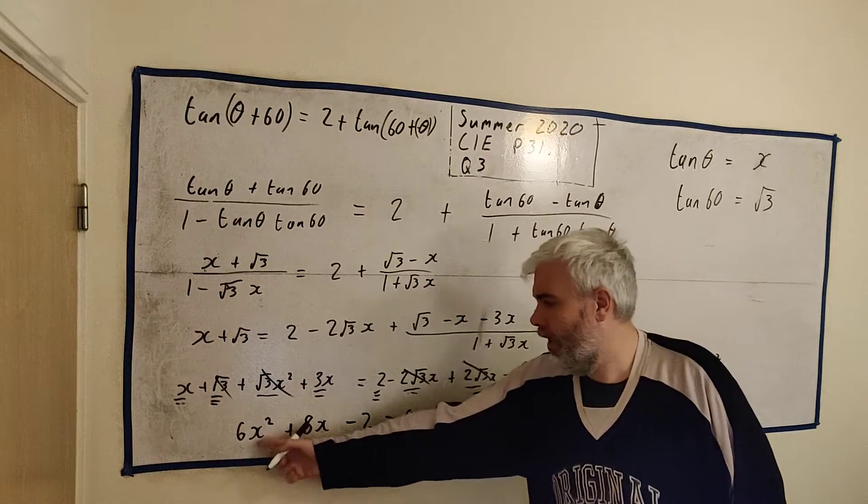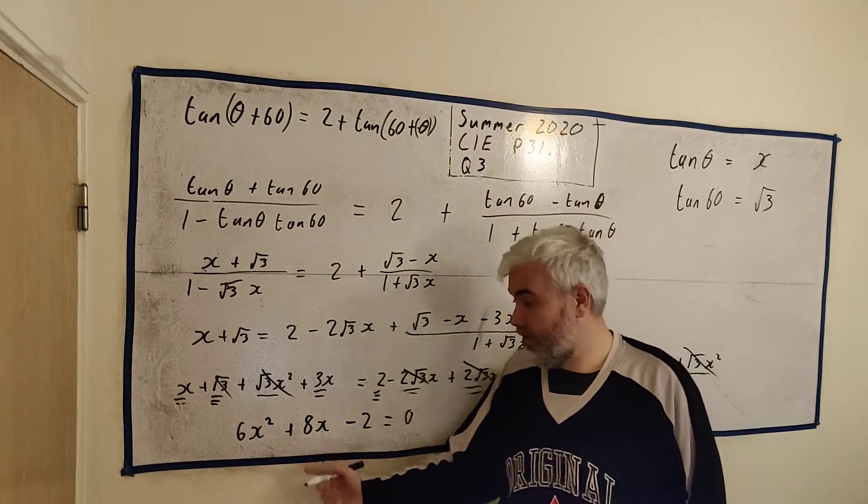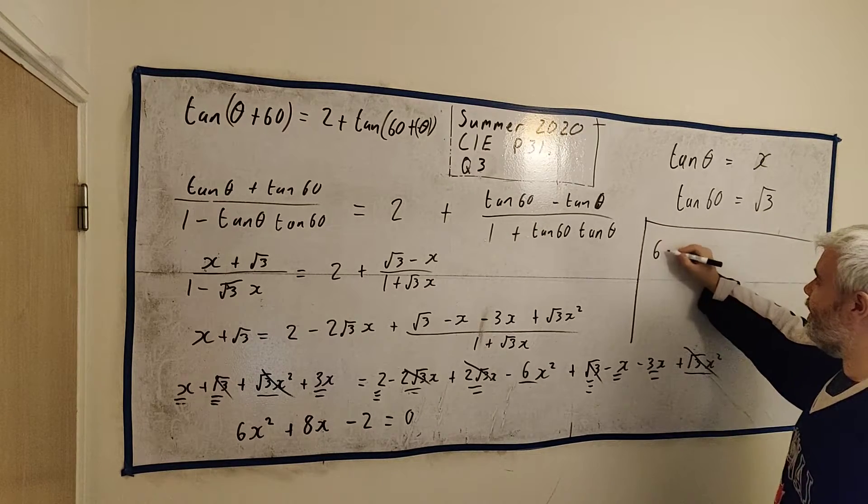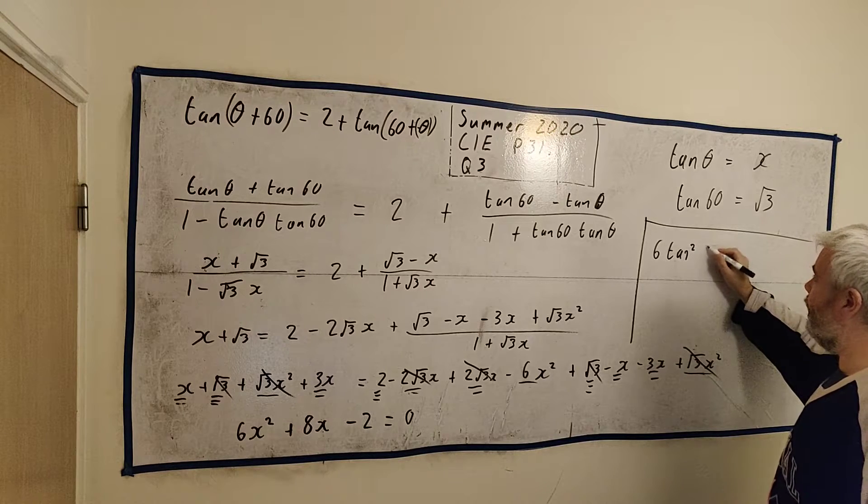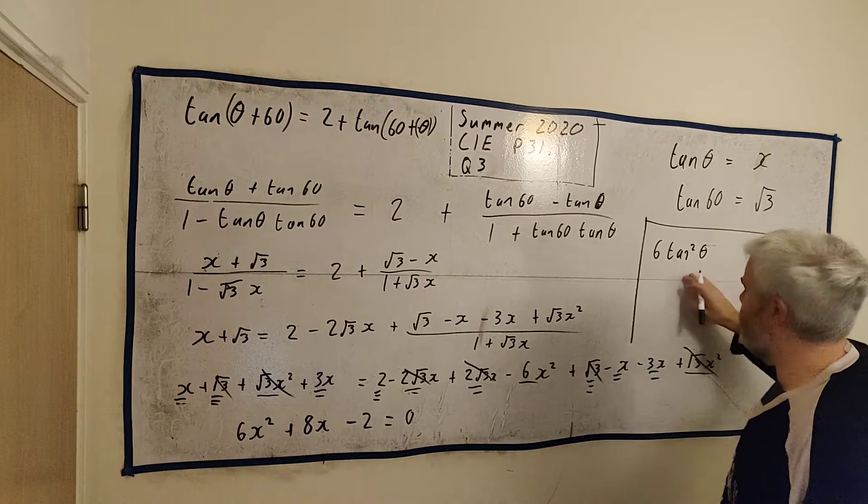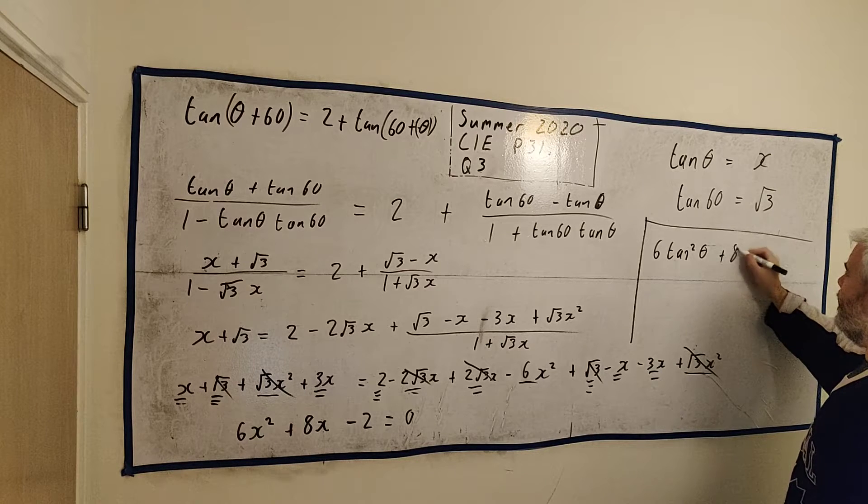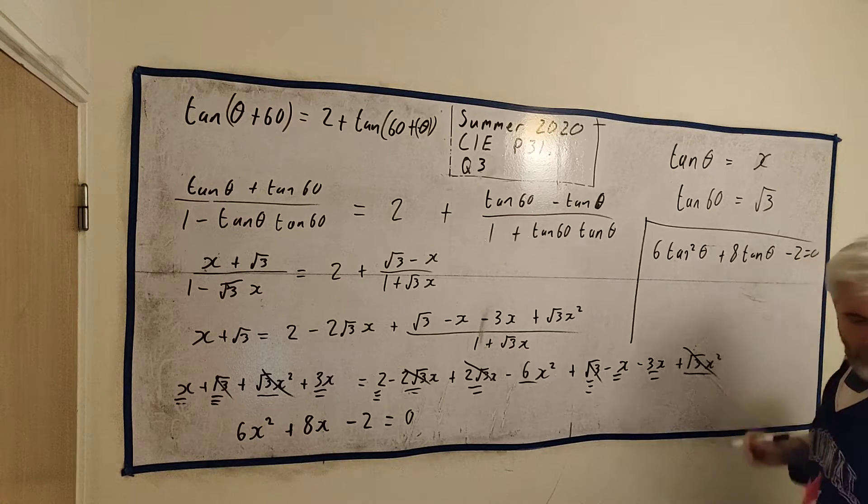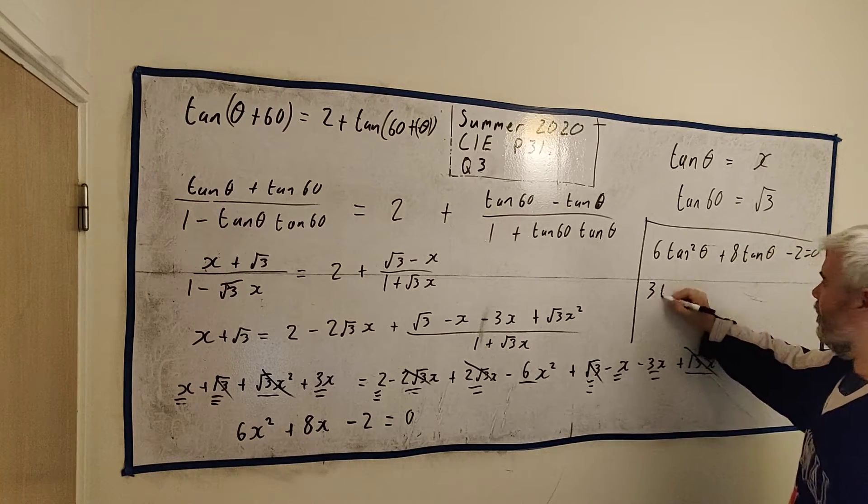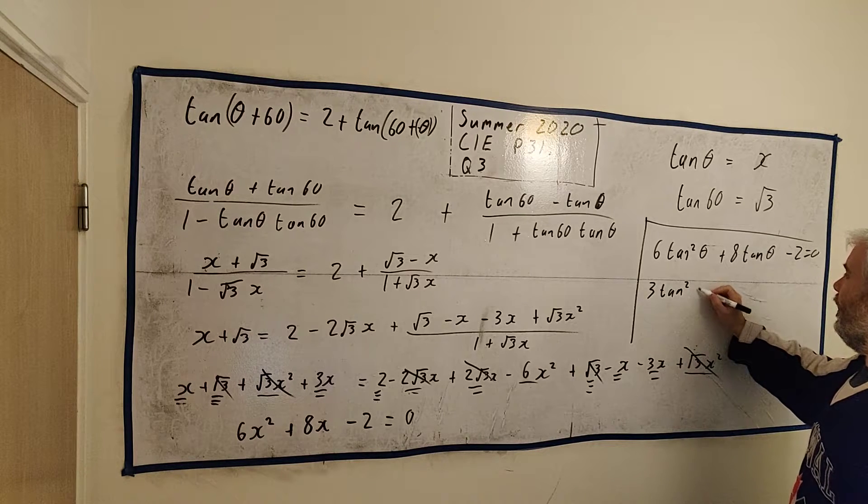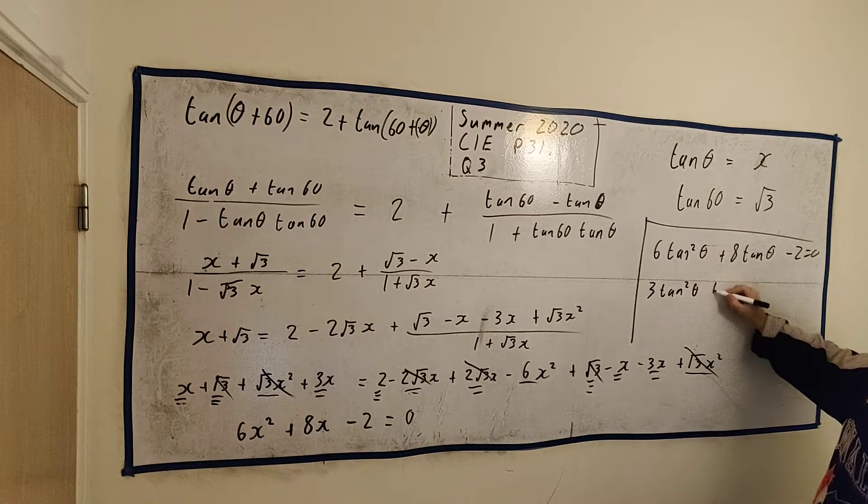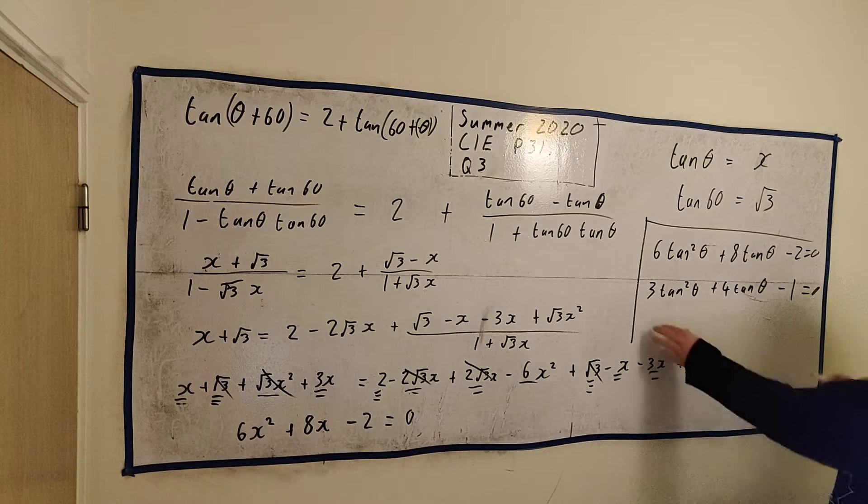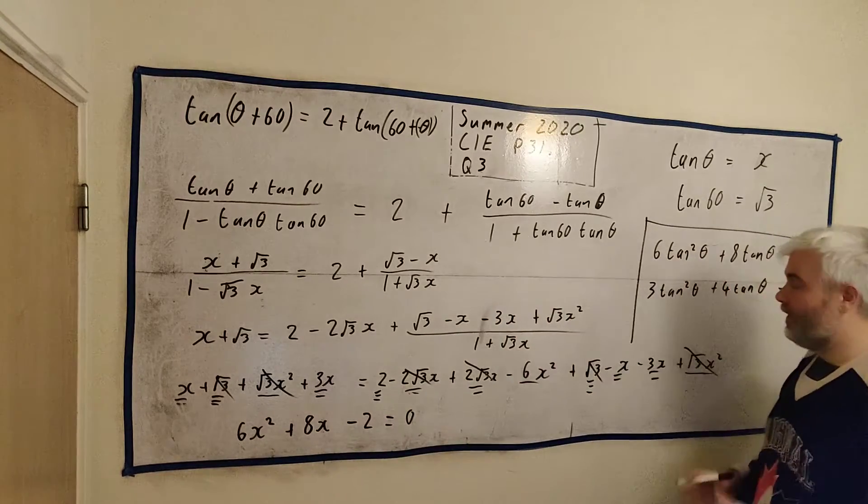Remember, the examiner doesn't know what X is. You made X up. So give them their actual answer. And it's 6tan²θ plus 8tan θ - 2 = 0. Or you know what? Let's write that again as 3tan²θ + 4tan θ - 1 = 0. Everything could be divided by 2. That's our quadratic.